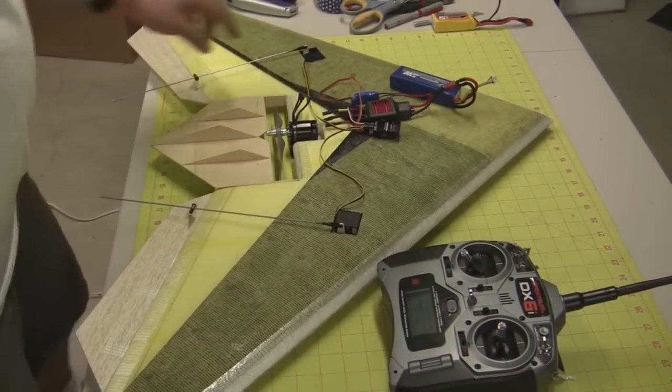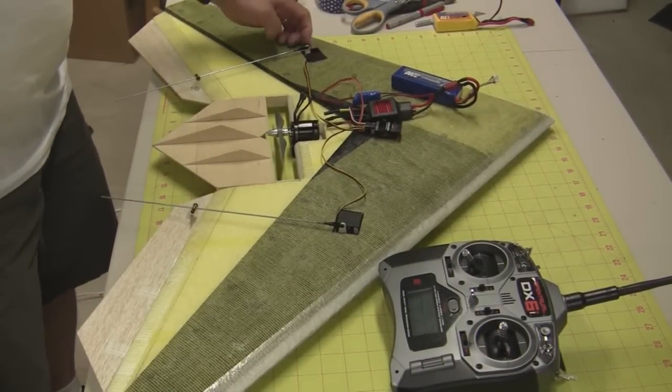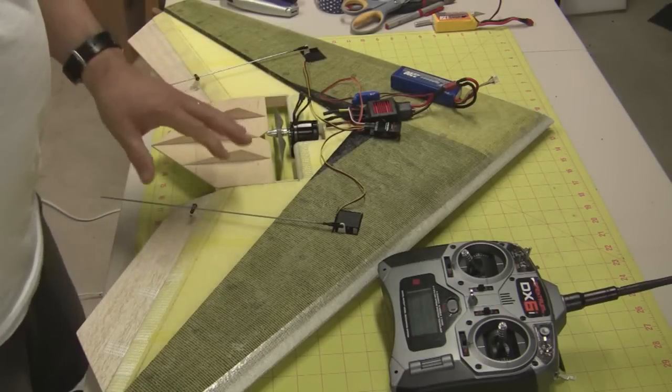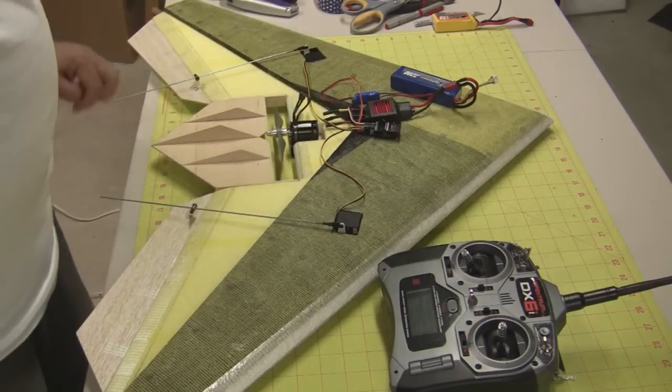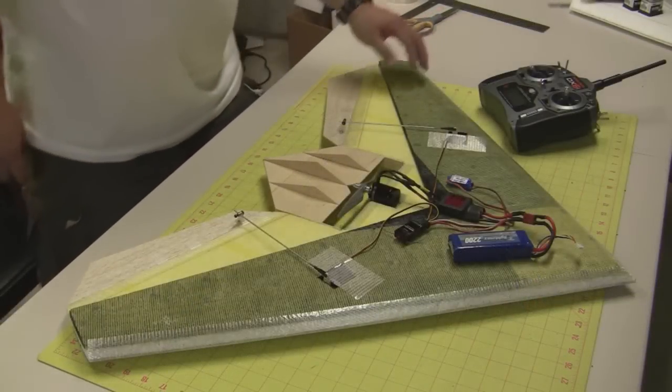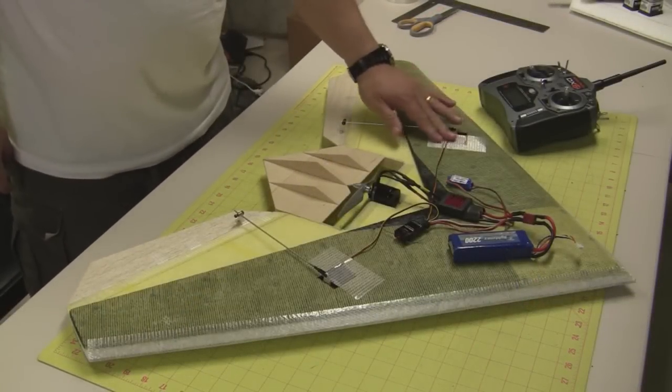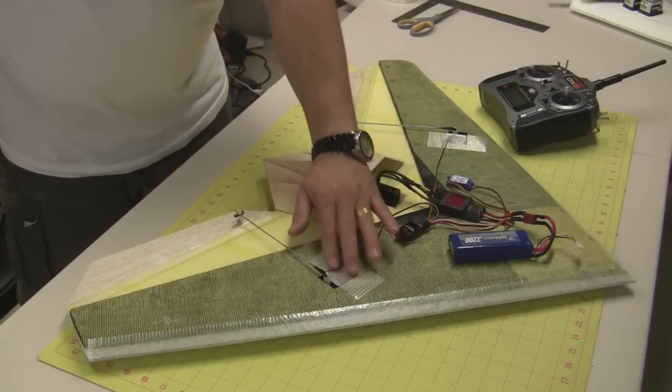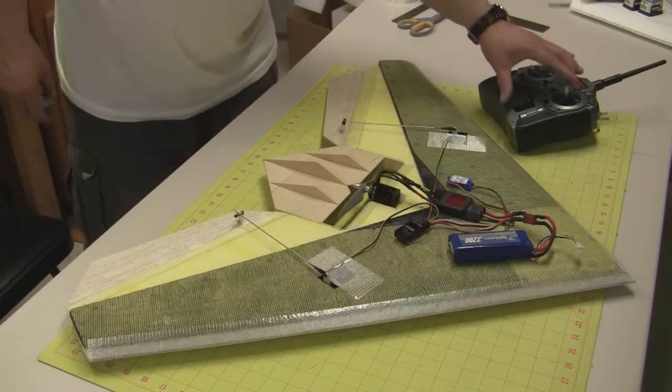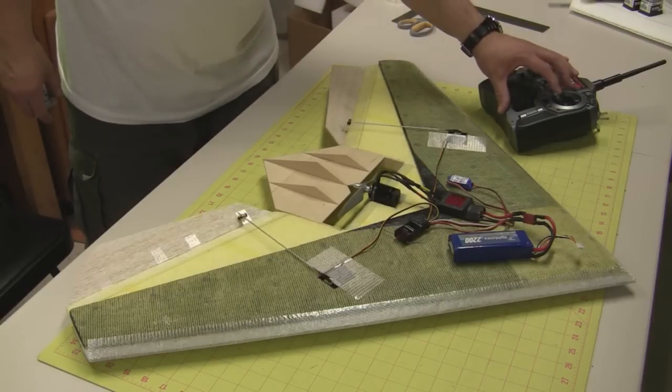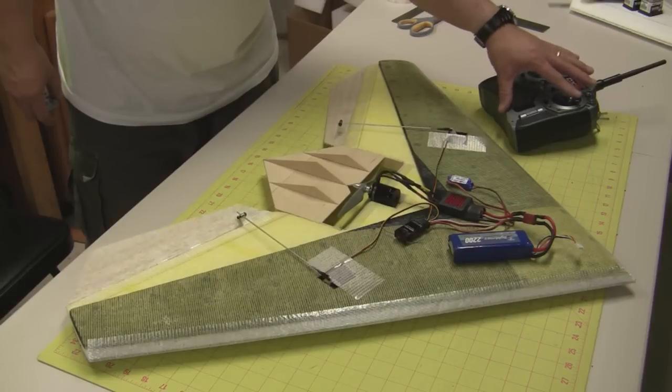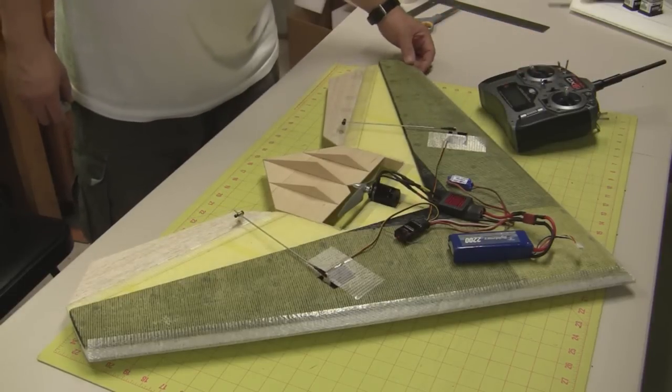One last thing before we glue the servos in: we want to make sure that the control arms are centered, so hook the radio up and turn it on, just center the servos, and make sure that the control rods aren't on crooked. It's a lot easier to do it before we glue them in. Okay, we've got the servos glued in. I put some strapping tape over them to help secure them in there a little bit better. The control rods are hooked up and so are the control horns. Just got the radio turned on—we're going to test them, make sure they're working. Elevators look fine and so do the elevrons.